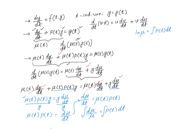Now, p(t) is just a function — we don't know exactly what it is. To solve for μ, we take the exponential of both sides: exp(ln(μ)) = exp(∫p(t)dt). Since the exponential and natural log are inverses of each other, they cancel, leaving μ(t) = e^(∫p(t)dt). This is the desired function.